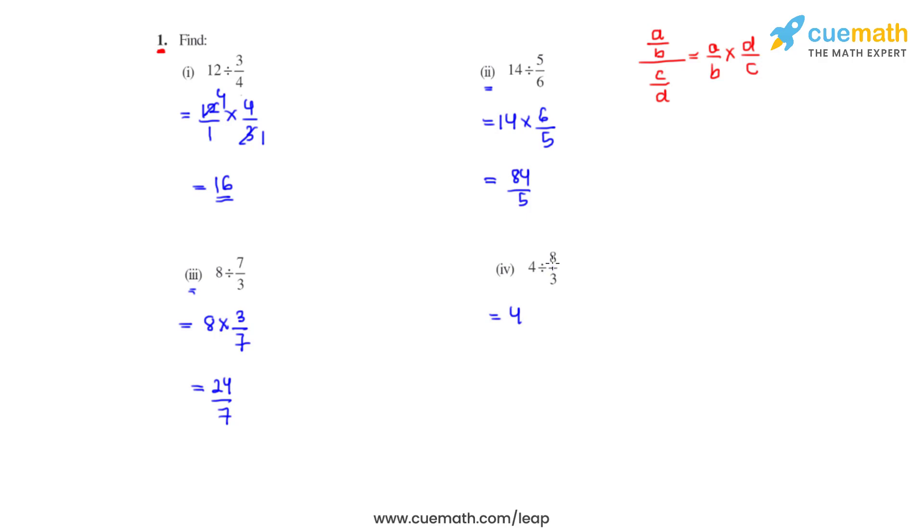The fourth part is 4 which is to be divided by 8 over 3. The reciprocal of 8 over 3 is 3 over 8. Now 4 times 1 is 4, 4 times 2 is 8, we get the final answer as 3 over 2.